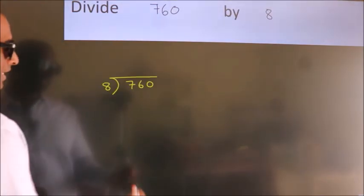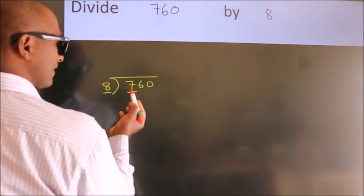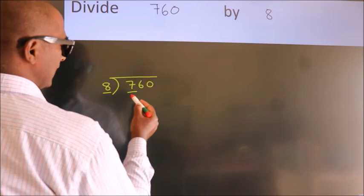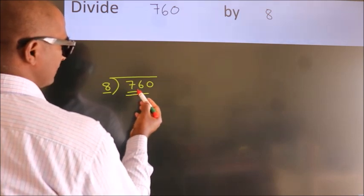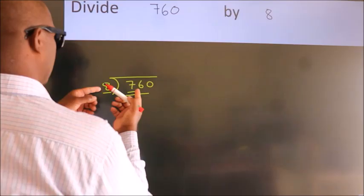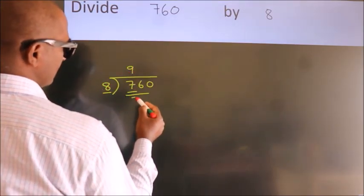Next, here we have 7. Here 8. 7 is smaller than 8, so we should take two numbers: 76. A number close to 76 in 8 table is 8 nines, 72.